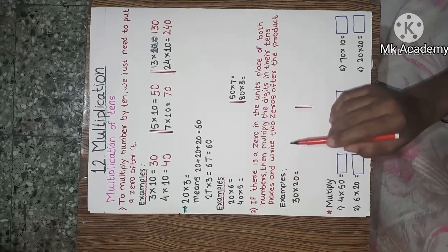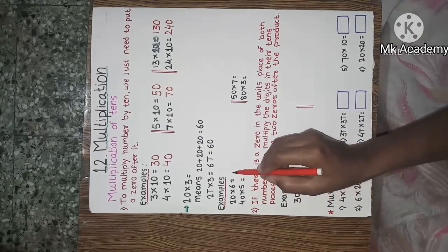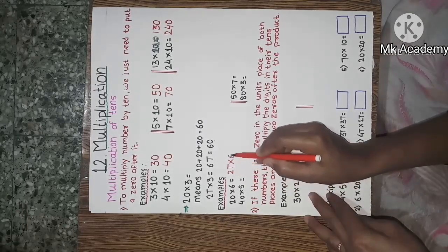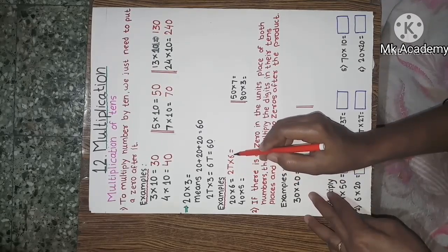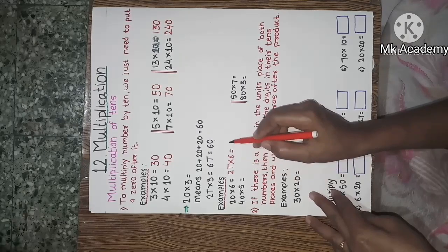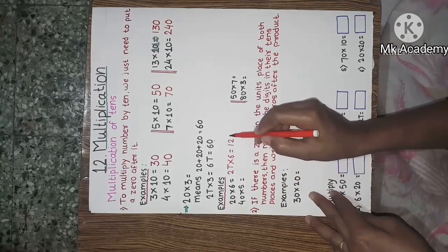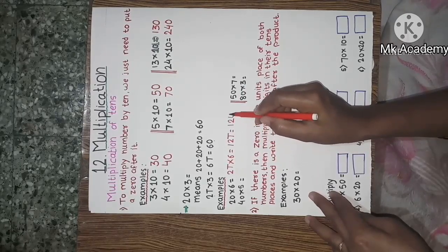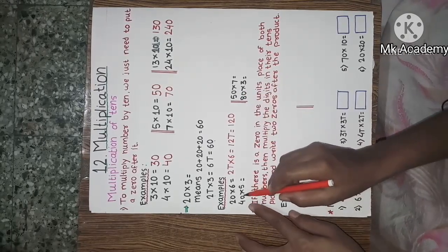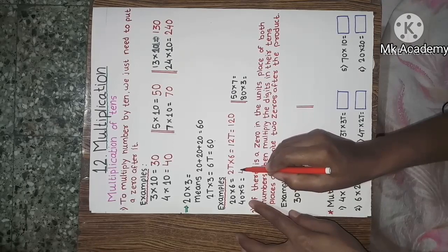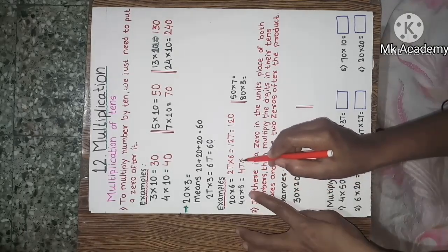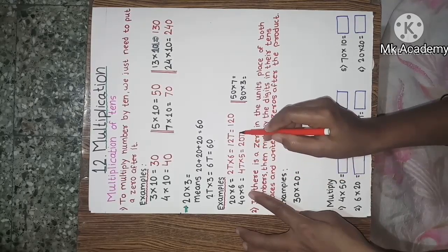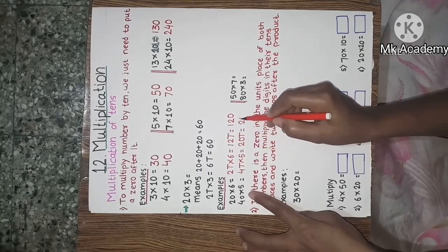Another example: 20 into 6. 20 means 2 tens into 6 — 2 sixes are 12 — giving 12 tens, which means 120. Now another example: 40 into 5. 40 means 4 tens into 5 — 5 fours are 20 — giving 20 tens, which means 200.